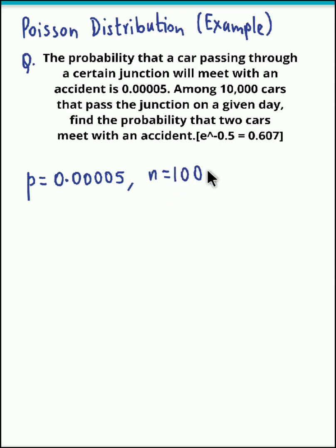Now we can easily obtain the parameter lambda which is n times P. So n is 10,000 times P. This can be written as 5 upon 100,000.